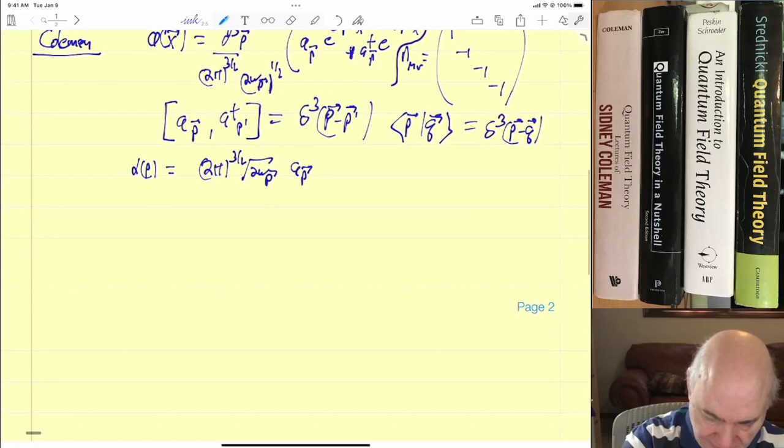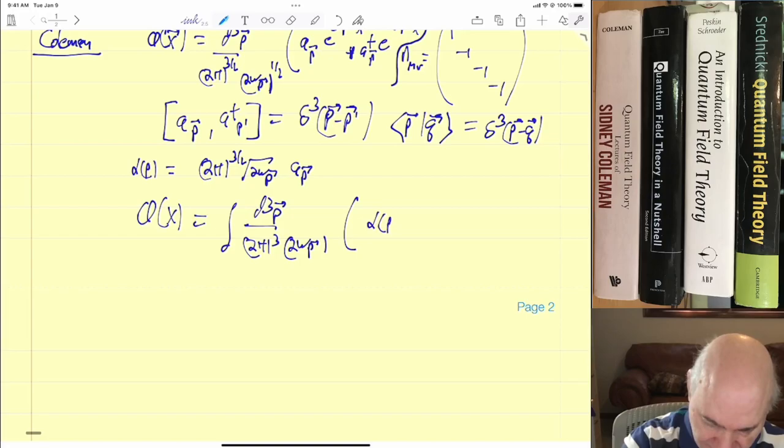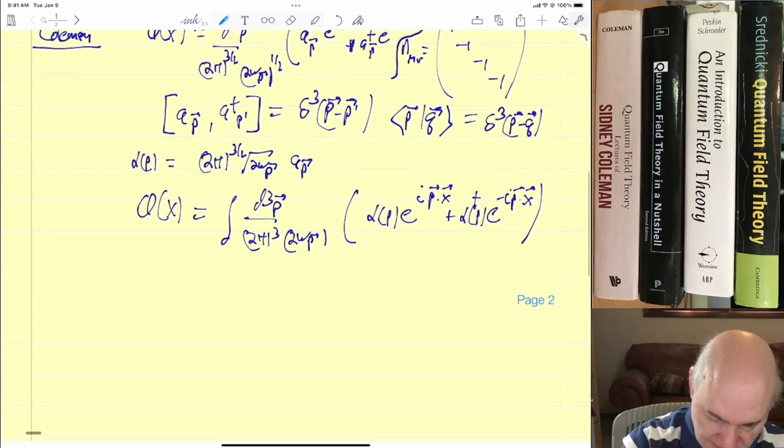And ⟨p|q⟩ equals δ³(p-q). So he's using a non-relativistic convention. But he also defines these relativistic creation and annihilation operators. He defines these alphas: (2π)^(3/2) square root of 2ωp times ap. And in terms of the alphas, the phi becomes the integral of d³p over (2π)³ times 2ωp.